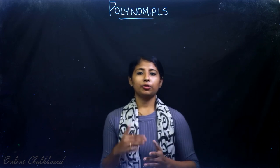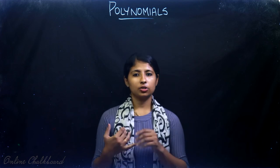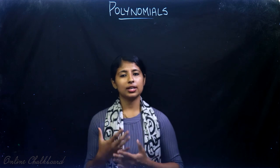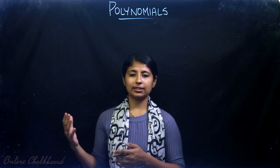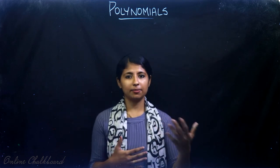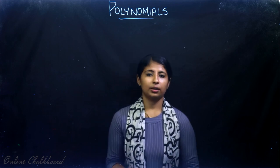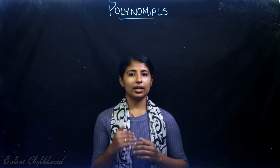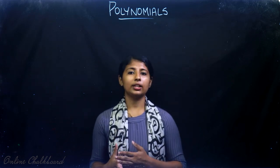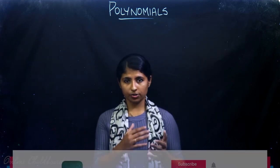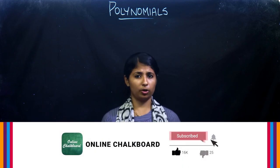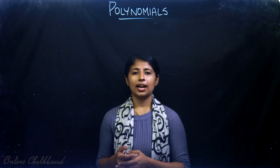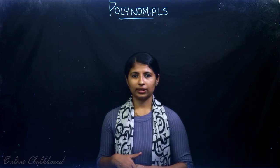That's all for today. We have learned the geometrical meaning of zeros of linear, quadratic, and cubic polynomials, and how to count zeros by seeing how many times the graph touches the x-axis. In our next video we will start with the relation between the coefficients of a polynomial and its zeros. Practice more questions and see you in the next video. Thank you.